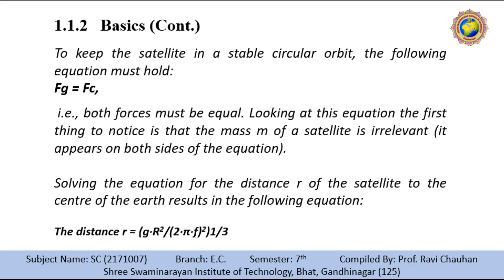To keep the satellite in a stable circular orbit, the condition Fg = Fc must hold — both forces must be equal. Notice that the mass m of the satellite is irrelevant; it appears on both sides of the equation and cancels out. Solving for the distance r of the satellite to the center of the earth gives: r = (g · R² / (2πf)²)^(1/3). From this equation, the distance of the satellite to the earth's surface depends on its rotation frequency f.